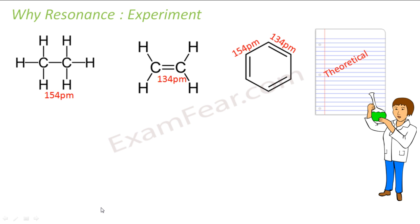The first question that comes to our mind is why we are studying resonance and why this term came into picture. Scientists and chemists found that the CC single bond length is 154 picometers, and they observed this in various carbon compounds — ethane, propane, butane. Experimentally they confirmed the CC single bond is 154 picometers, and theoretically they assumed it is always 154 picometers.